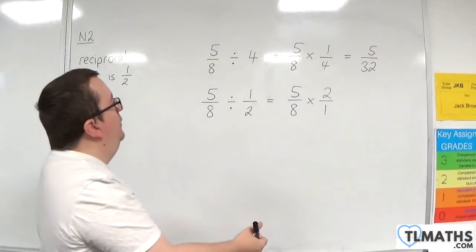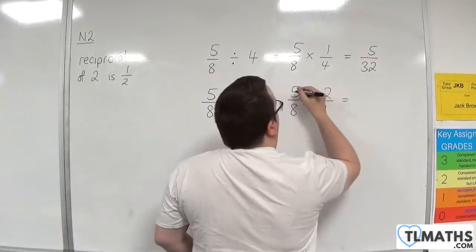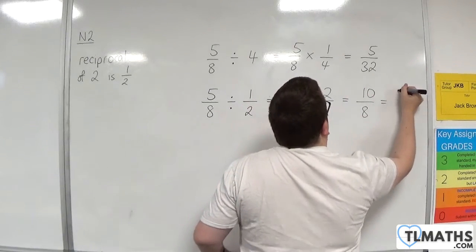So I multiply by 2 over 1, and then I get 5 times 2, which is 10, over 8 times 1, which is 8. And that's 5 quarters.